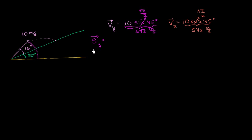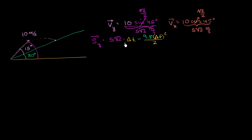Now let's think about our vertical displacement. The vertical displacement is going to be our initial vertical velocity, 5√2, times our change in time, plus the acceleration term. The acceleration is negative 9.8 meters per second squared, so we get: Δy = 5√2·Δt - (9.8/2)·Δt².